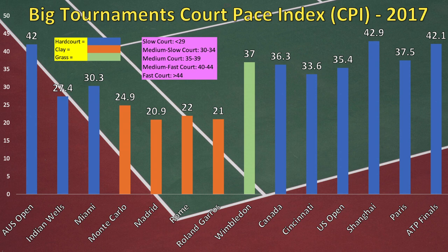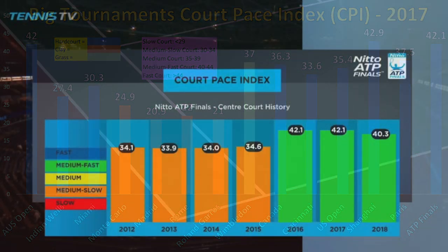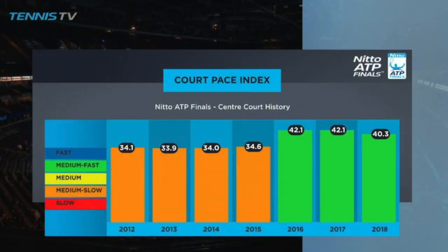Then the two late-season hard courts: Shanghai and the Paris Indoors. Shanghai comes in at a mercurial 42.9 — the fastest court on our graph in 2017. Paris is a medium court at 37.5, with pretty ideal playing conditions in that indoor arena. Finally, the ATP Finals — the last tournament of the season, also an indoor event. Used to be played in London from 2009 to 2020, now played in Turin, Italy. Pretty fast conditions at the O2 Arena, at 42.1.